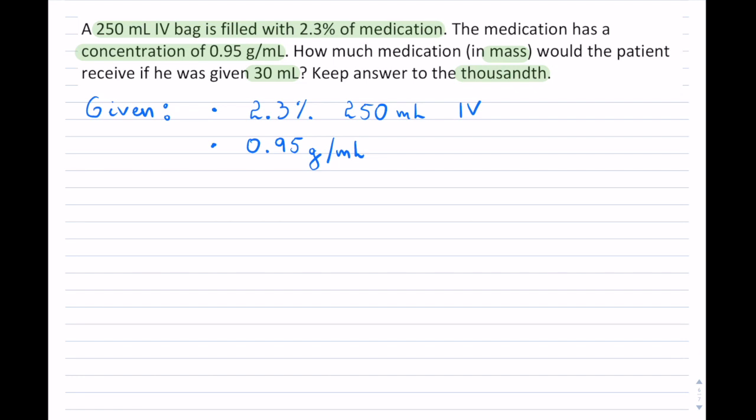And then the last item is how much medication would the patient receive if he was given 30 milliliters? So they're going to get 30 milliliters in total. So there's a lot happening here.